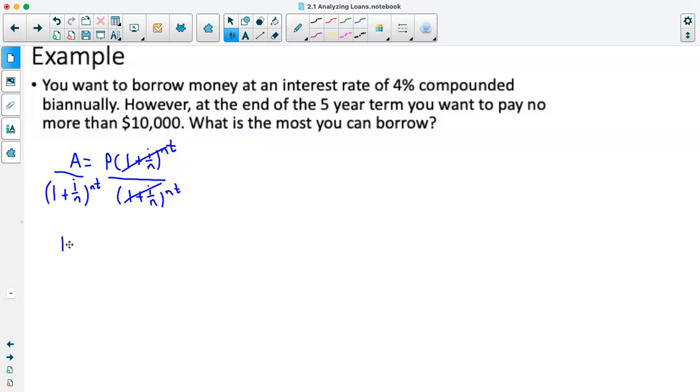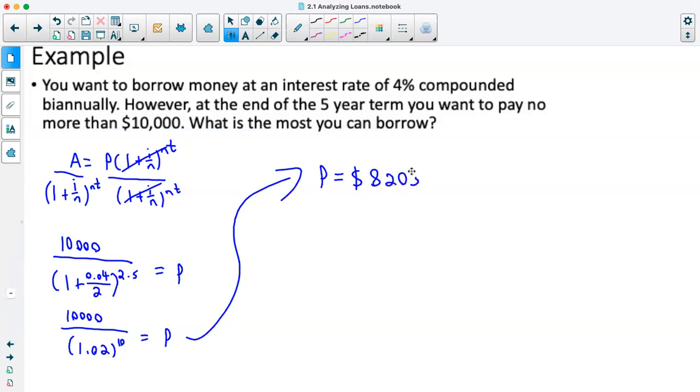That gets our principal on its own. So we'll substitute in our values. We've got 10,000 divided by 1 plus 4% as a decimal is 0.04 divided by n. It's compounded biannually, so divide by 2 to the power of 2 times 5. And that will give us our principal. So we'll simplify this. That gives us 10,000 over 1.02 to the power of 10 is equal to P. We calculate that. The maximum that we can borrow with only having to pay $10,000 back is $8,203.48.